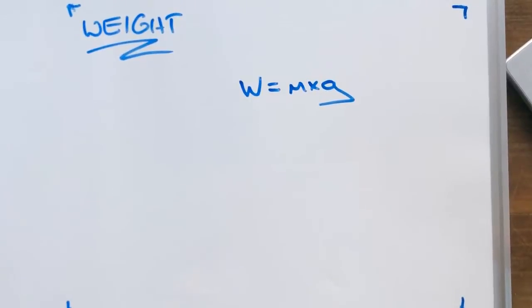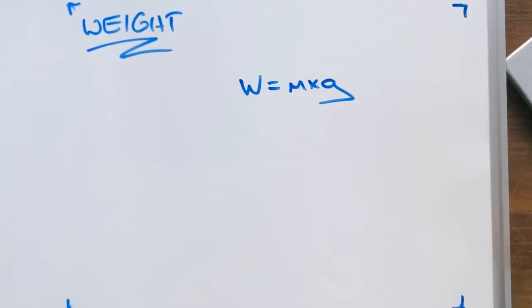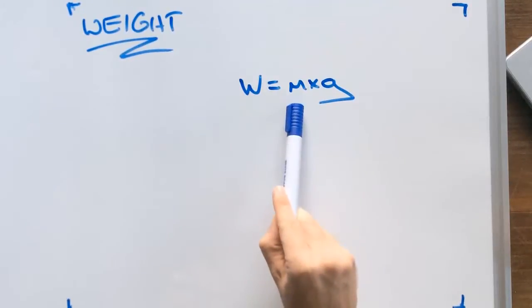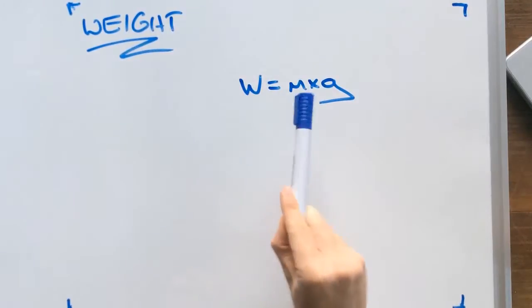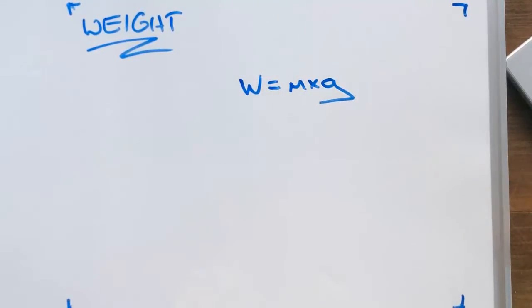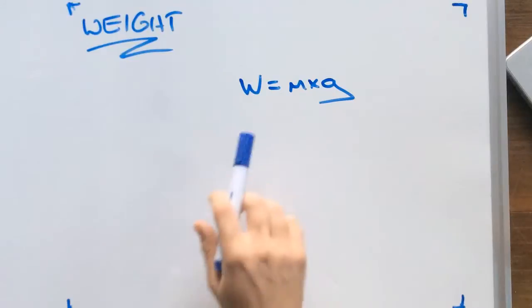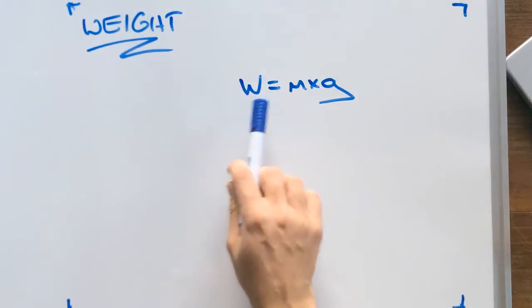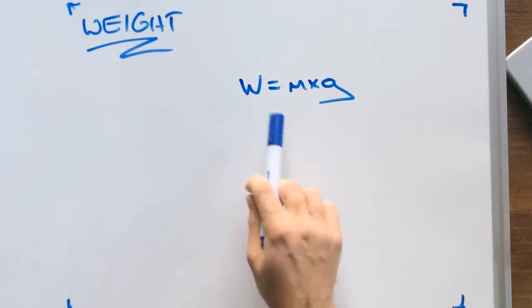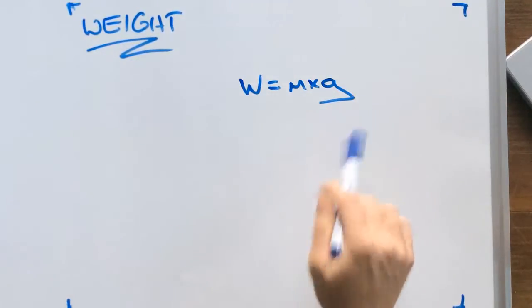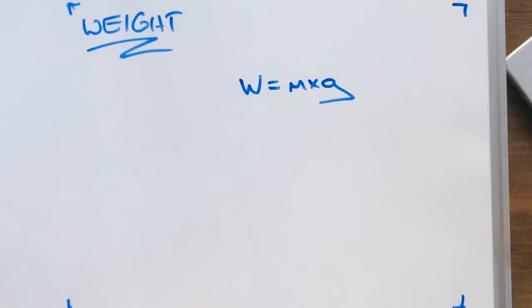Kia ora team, so today we're going to look at how to calculate for weight. Weight is found by taking our mass and multiplying it by our gravity. So our formula for weight is: weight is equal to mass times gravity.